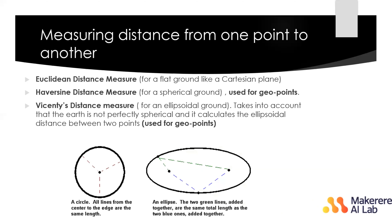The Haversine distance measure is for a spherical ground like Earth. There is also Vincenty's distance measure, which takes into account that the Earth is not perfectly spherical and calculates the ellipsoidal distance between two points — it's also used for zero points.